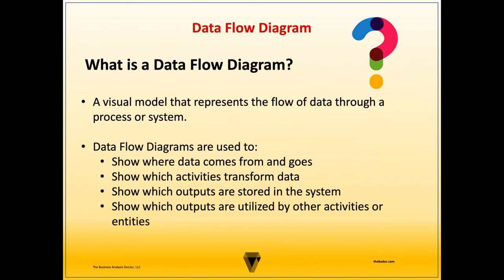A data flow diagram is a visual model that represents the flow of data through a process or system. Data flow diagrams are used to show where data comes from and goes, which activities transform data, which outputs are stored in the system, and which outputs are utilized by other activities or entities.